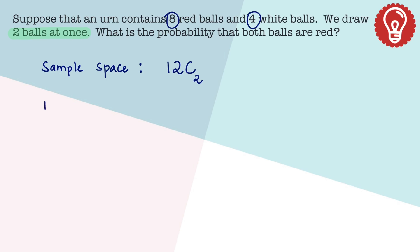Let's now look at the favorable outcomes. Because he's talking about both the balls being red, there are eight red marbles. So out of these eight marbles, I need to select two.